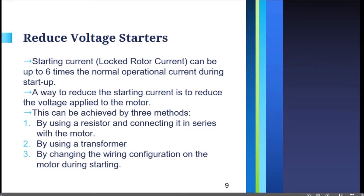If we go beyond the five horsepower rating of a motor, there is the so-called lock rotor current. The lock rotor current can be six times the normal operating current of the motor. For example, if the full load current of the motor is 10 amperes, when the motor is starting, six times that would be 60 amperes.